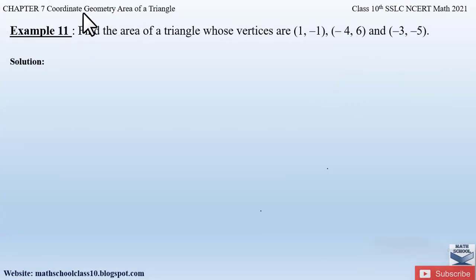Example 11 from Chapter 7, Coordinate Geometry says: Find the area of a triangle whose vertices are (1, -1), (-4, 6), and (-3, -5). So here they have given us vertices of a triangle.